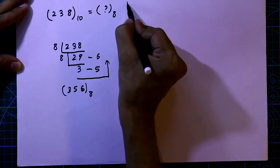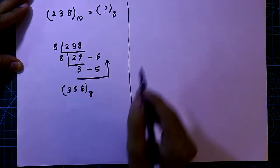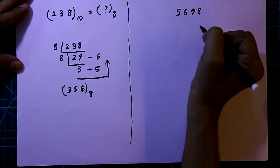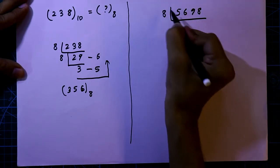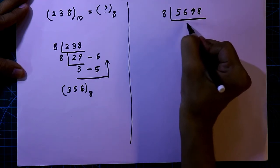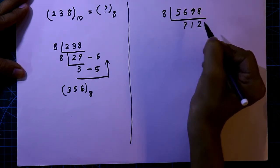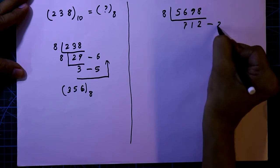Now we will see another example, 5698. Now we have to divide this number by 8. The quotient will be 712 and the remainder will be 2.